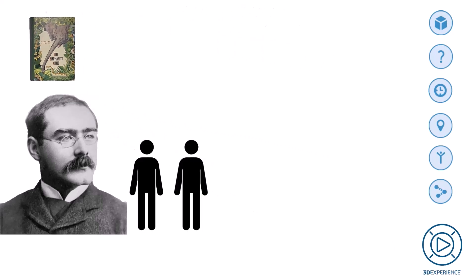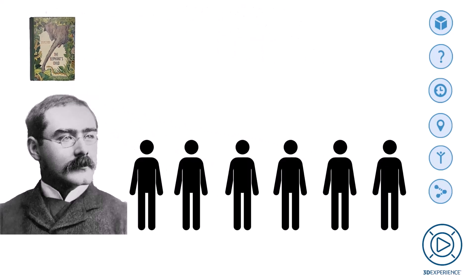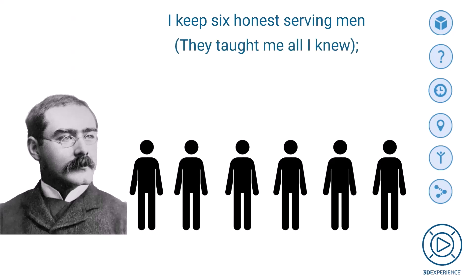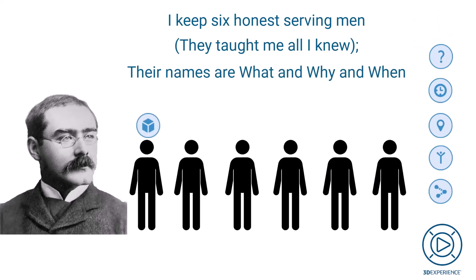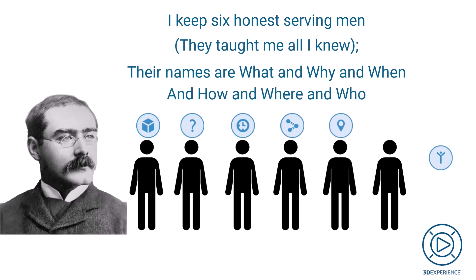Within this book there was a poem called 'I Keep Six Honest Serving Men.' For the purpose of the six W tags, only the first four lines are important: 'I keep six honest serving men, they taught me all I knew. The names are What and Why and When and How and Where and Who.' The poem itself is a bit longer, but the focus here is on those first four lines.